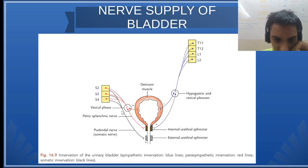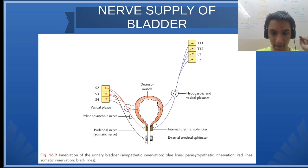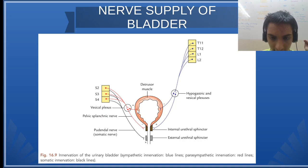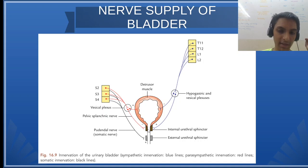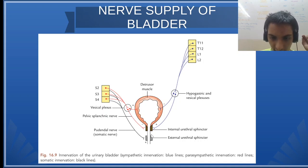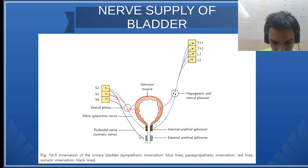Also, we are seeing a branch here — this is the pudendal nerve. This is the pelvic nerve from the vesicle plexus. From the vesicle plexus, one neuron is supplying the detrusor muscle, and the other pelvic nerve is supplying the internal sphincter. Please remember the two sphincters — internal and external. The external will be supplied by the pudendal nerve.